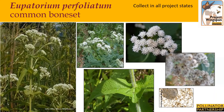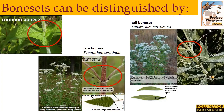Eupatorium perfoliatum, or common boneset, typically occurs in wet soils, in low woods, thickets, and in meadows and prairies. It grows two to four feet tall and tends to form colonies. It has white flat-top clusters of small flowers appearing in the late summer to fall. Its stems are covered in long hairs and its leaves are opposite, lance-shaped, and perfoliate — meaning they unite around the stems, almost appearing as one leaf. Common boneset can be distinguished from other boneset species by the perfoliate leaves that surround the central stem. Tall boneset has opposite leaves that are sessile or have no leaf stem, and late boneset has distinct long petioles or leaf stems. All these species will have similar clusters of white flowers.